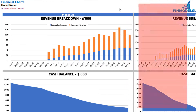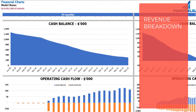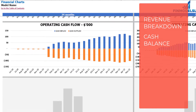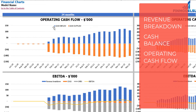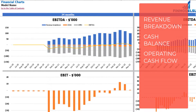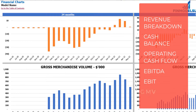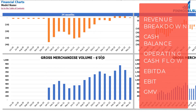On the financial charts tab, you may review your main financial KPIs in two sets of charts: on the left, 24 months; on the right, five years broken down by months. At the top, you may see revenue breakdown by subscription and commission revenue. The next set shows cash balance by months, followed by operating cash flow broken down by cash inflow and outflow. The next chart shows the EBITDA breakdown — revenue, COGS and OPEX — with EBITDA as a yellow line. The last set shows gross merchandise volume by months.